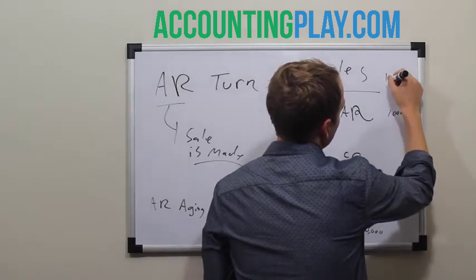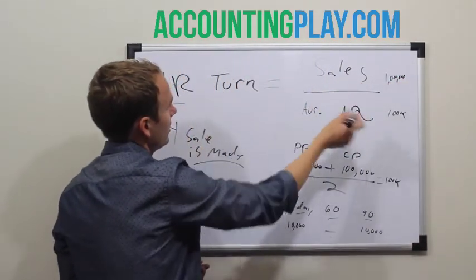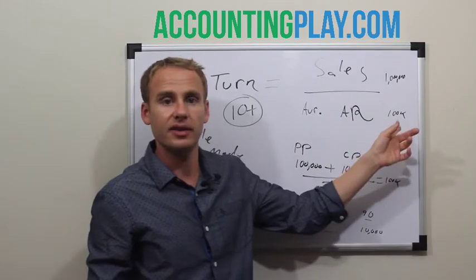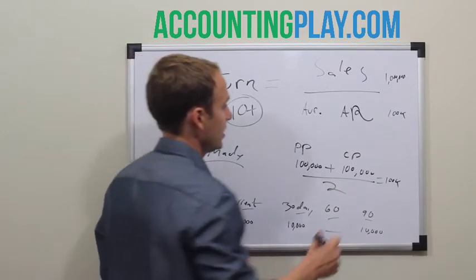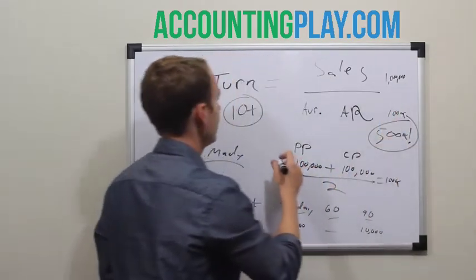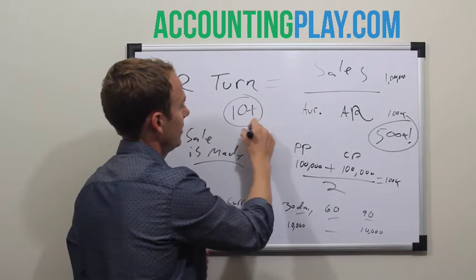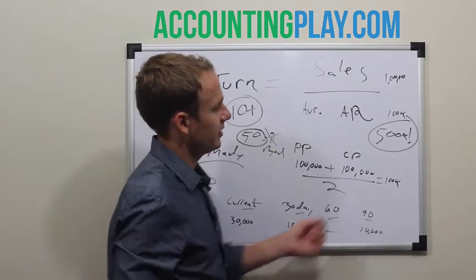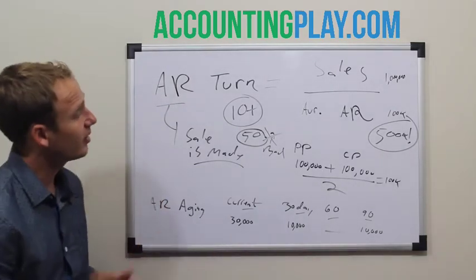Now let's say the average AR was $500K instead of $100K. On a million of sales, you're not at 10 — you're at like a 2 multiplier. So a high AR balance relative to sales is bad, because you're saying: whoa, there's a ton of uncollected money that we think we earned and billed out for, but it didn't actually get collected.